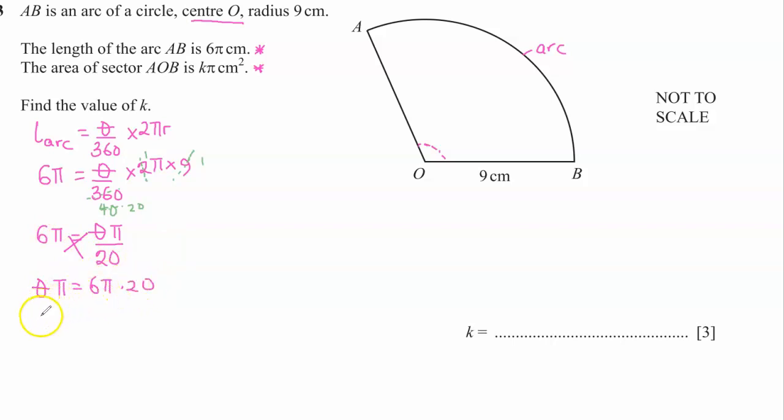If I divide both sides by π, this is going to be 6π times 20 divided by π. So clearly π is going to cancel π, and the angle is going to be 120 degrees. So this is the angle, 120 degrees.